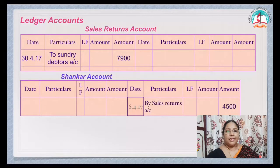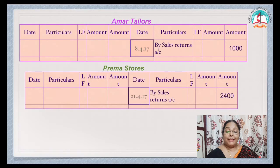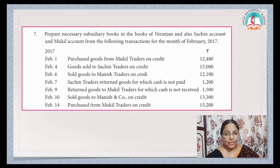Let's see the ledger accounts. Sales Returns Account — by Sundry Debtors Account, ₹7,900, which is the total of the Sales Returns Book. Shankar Account — by Sales Returns Account, ₹4,500. Amar Tailors Account — by Sales Returns Account, ₹1,000. Prema Stores — by Sales Returns Account, ₹2,400. No need to balance these accounts.